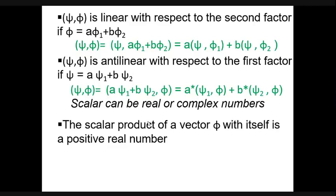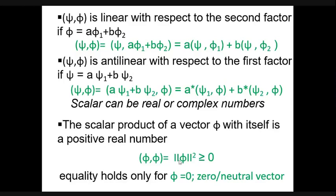Another condition is that if we take the scalar product of any element with itself, it is always a positive real number. That is, (phi, phi) equals the norm squared of phi, and this value is greater than or equal to zero. The equality holds — the scalar product is zero — only if we have the null vector or zero vector. Otherwise, the scalar product of an element with itself is always positive.